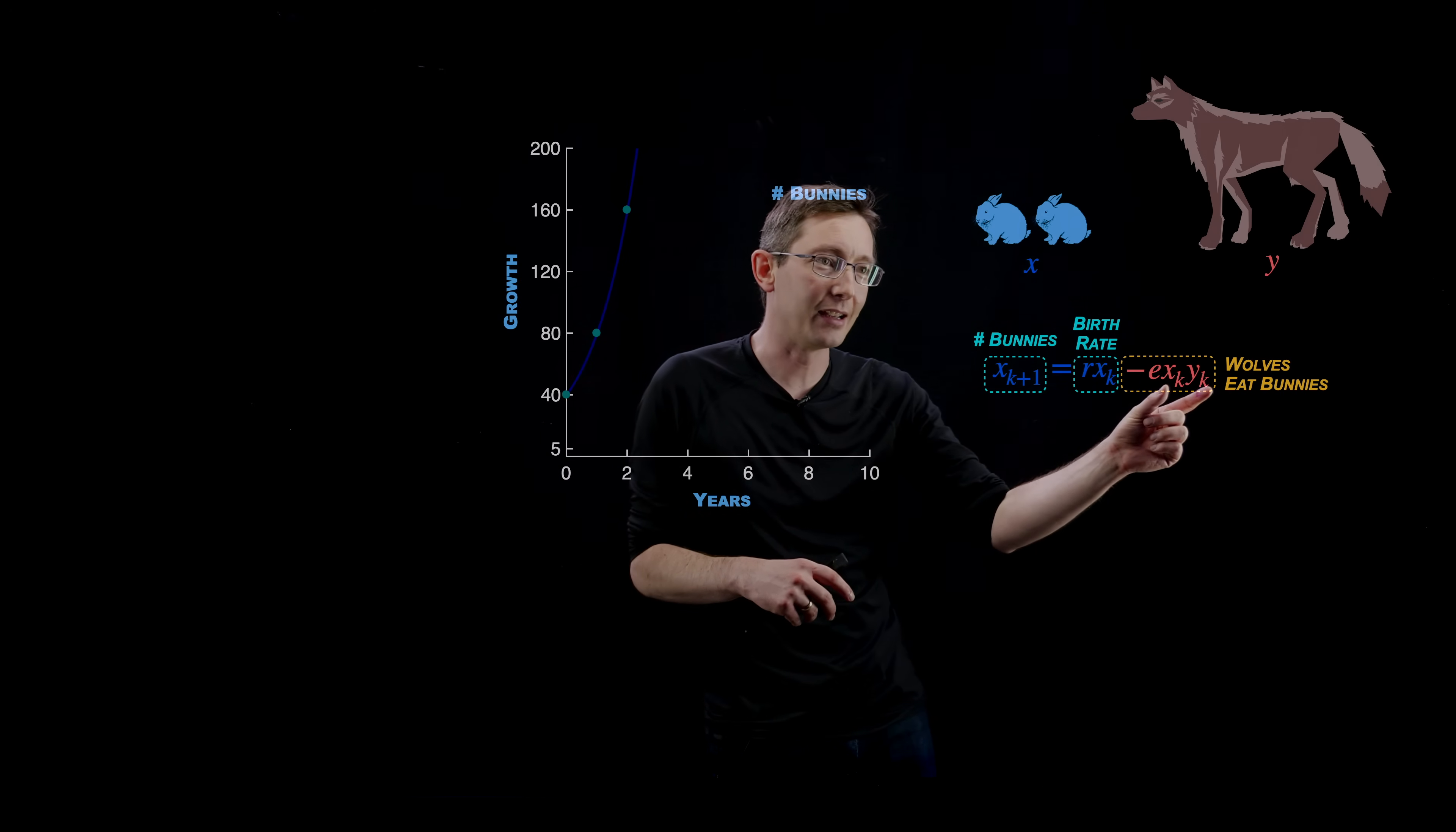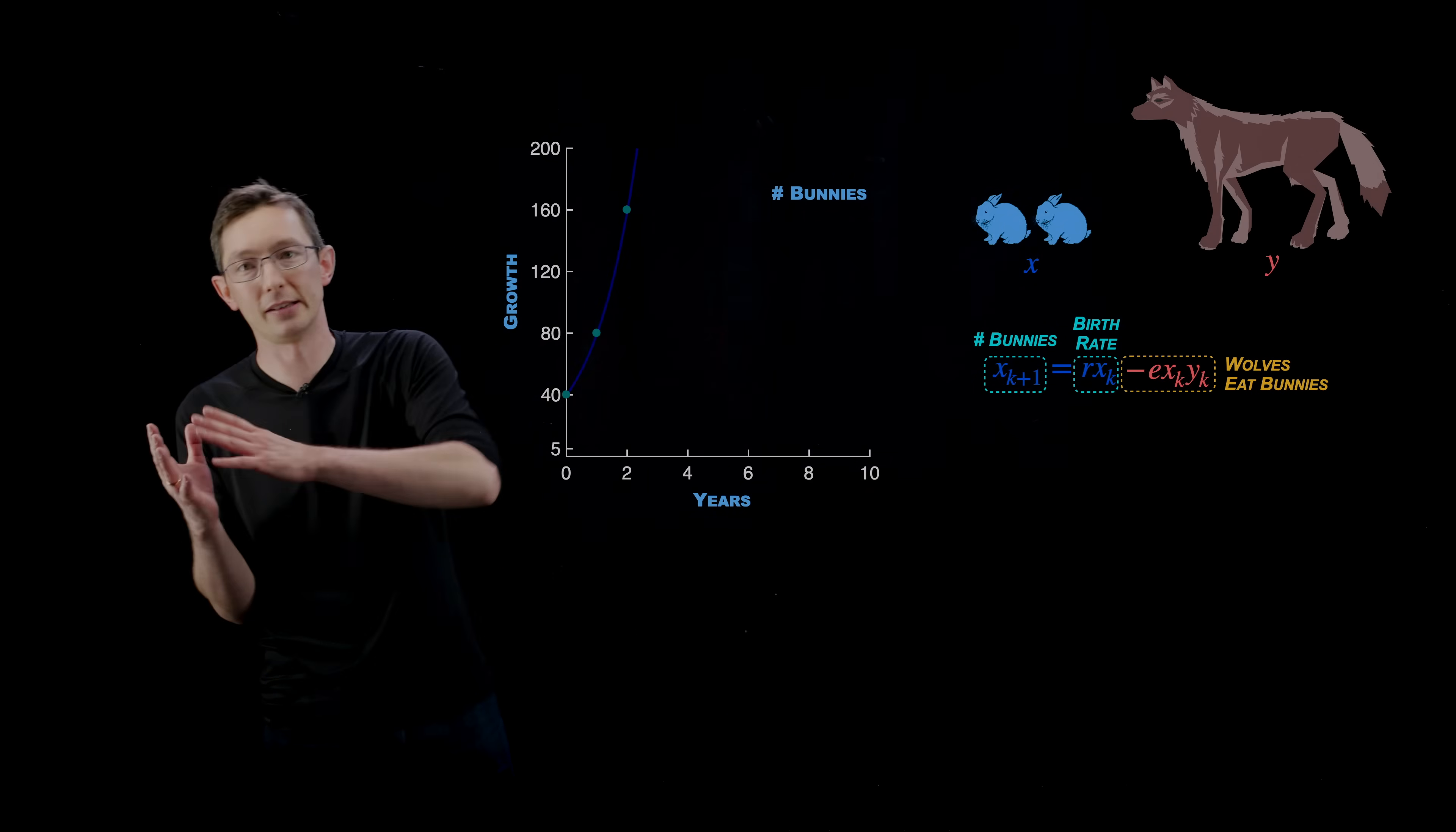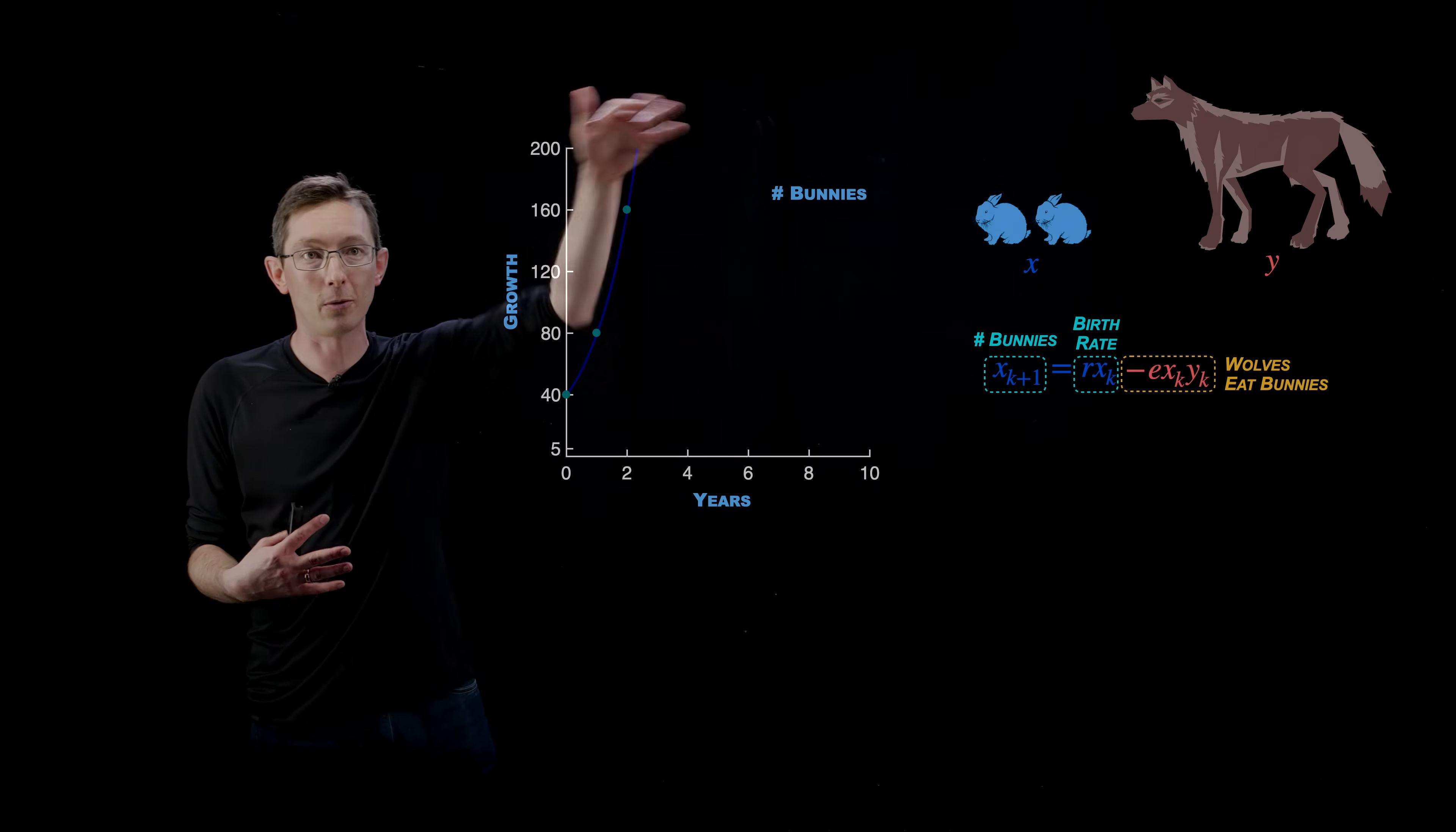Notice that this term here is pretty interesting. It's non-linear. What this says is that the number of bunnies that get eaten is proportional to how many bunnies there are. If I have twice as many bunnies, probably twice as many are going to get eaten. But it's also proportional to how many wolves there are. If I have twice as many wolves, I'm going to eat twice as many bunnies. So the rate at which wolves eat bunnies is proportional to X times Y. E is just a constant that tells you how frequently wolves come in contact with bunnies and eat them. This is going to balance out that exponential growth because the faster they grow, the more wolves are going to eat them.